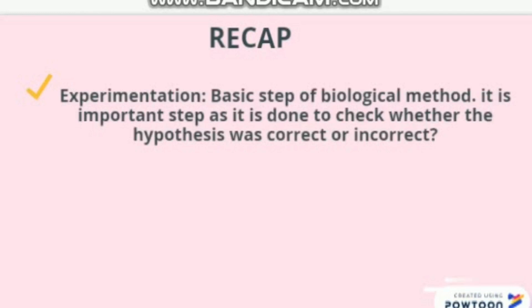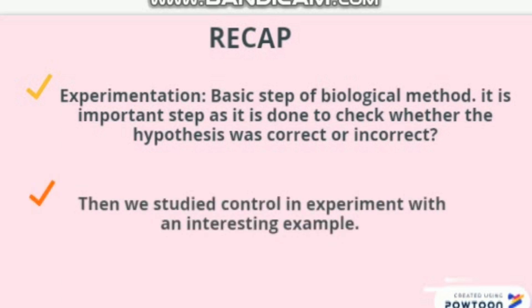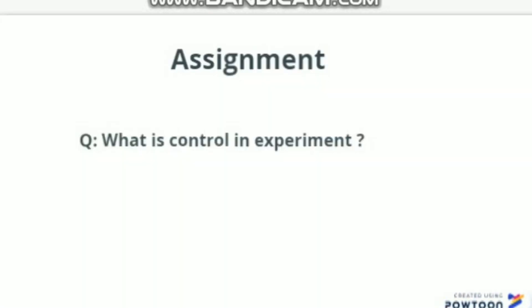Recap: First, we studied about experimentation. It is the basic step of the biological method and an important step, as it is done to check whether the hypothesis was correct or incorrect. Then we studied control in an experiment with an interesting example. The assignment question is: what is control in an experiment? You can find the answer in this video, so watch it carefully and do not forget to give the example.